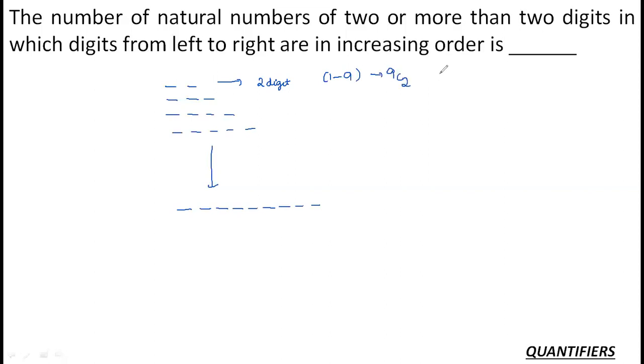If I have two digits, let's say I have selected four and five, there is only one way to arrange it: 45. If I am selecting three digits, let's say one, six, and nine, there is only one way to arrange it: 169. So I am only concerned about selection and not about the arrangement. So if I have to select two digits, the answer should be 9C2. For three digits, it should be 9C3. For four digits, 9C4, 9C5, up to nine digits, 9C9. These are the various possibilities that I have.